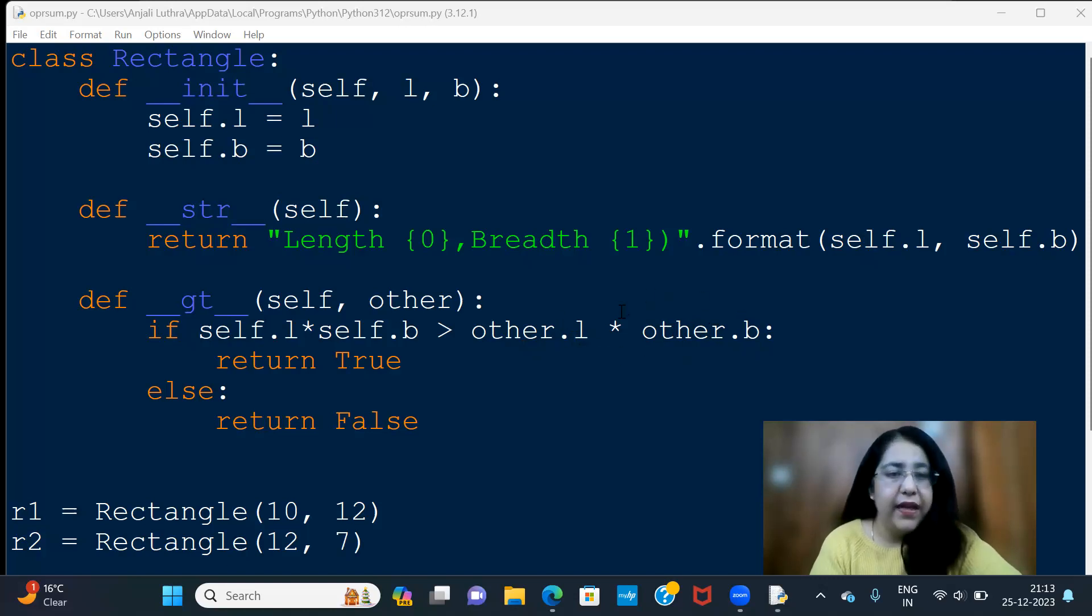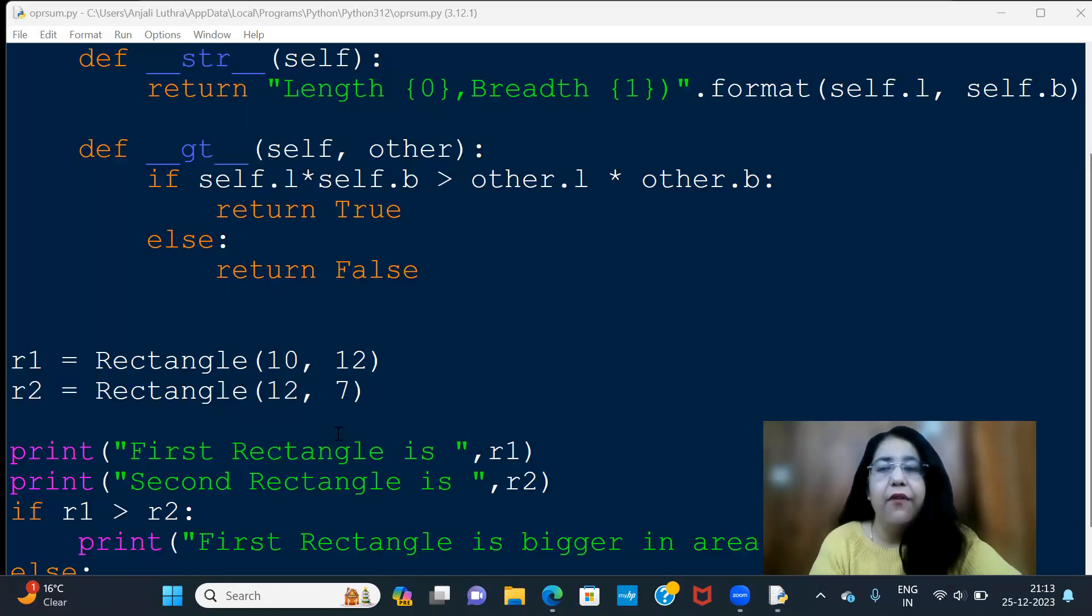Other.l into other.b I will get the second area. So if the first area is greater than the second area, then it will return true, and if it is not, then it will return false.